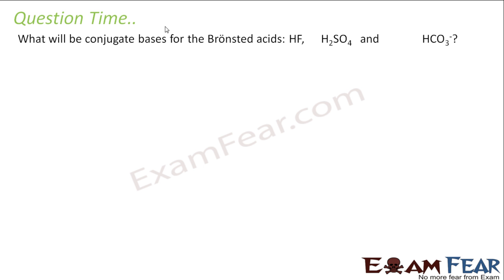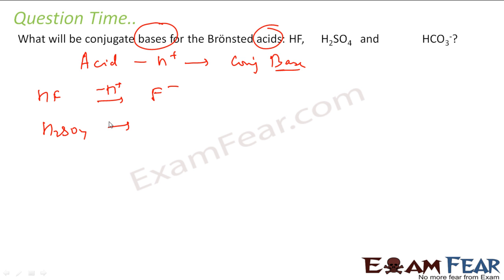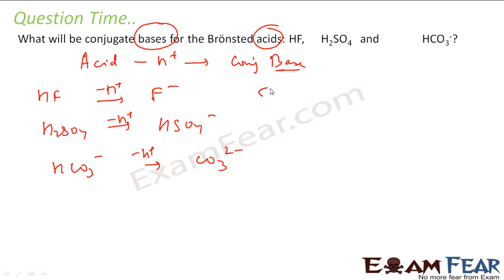The question says: find the conjugate base for these acids. To find the conjugate base of an acid, you take the acid and subtract H+ — you get the conjugate base. So HF minus H+ gives F-. H2SO4 minus H+ gives HSO4-. HCO3- minus H+ gives CO3 2-. These are the conjugate bases.